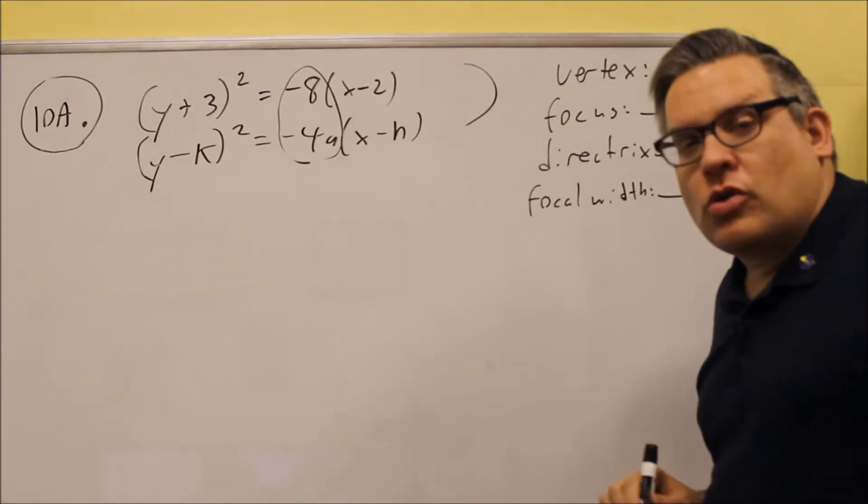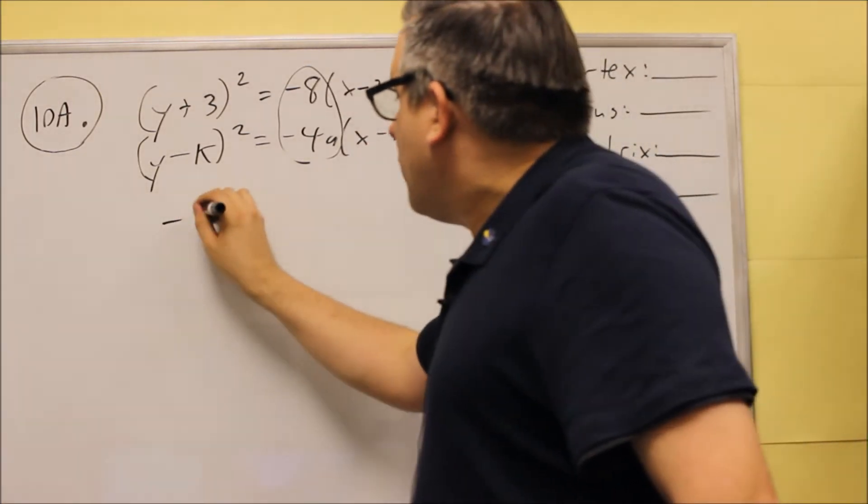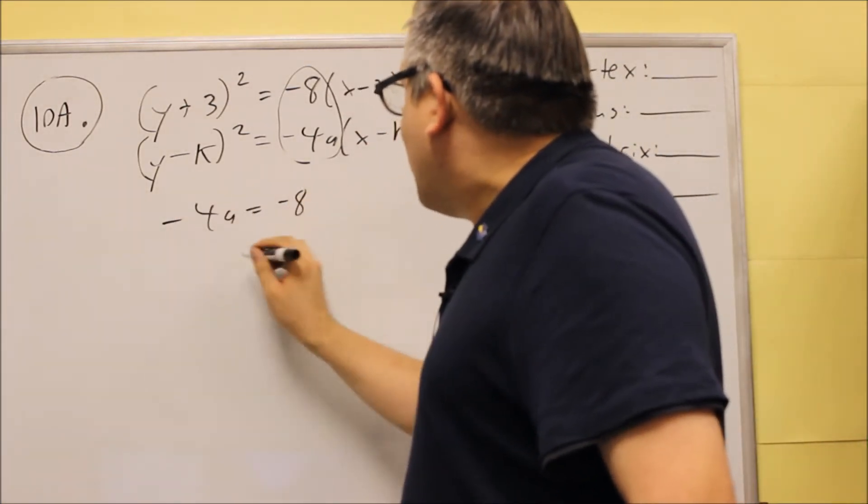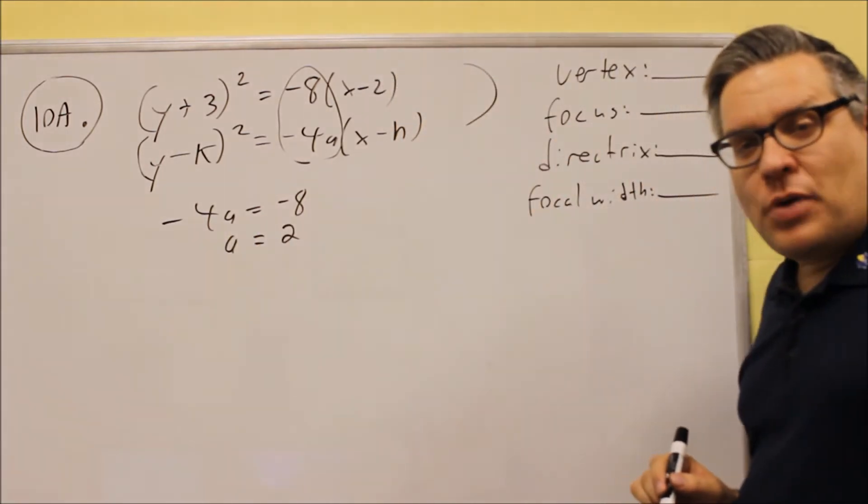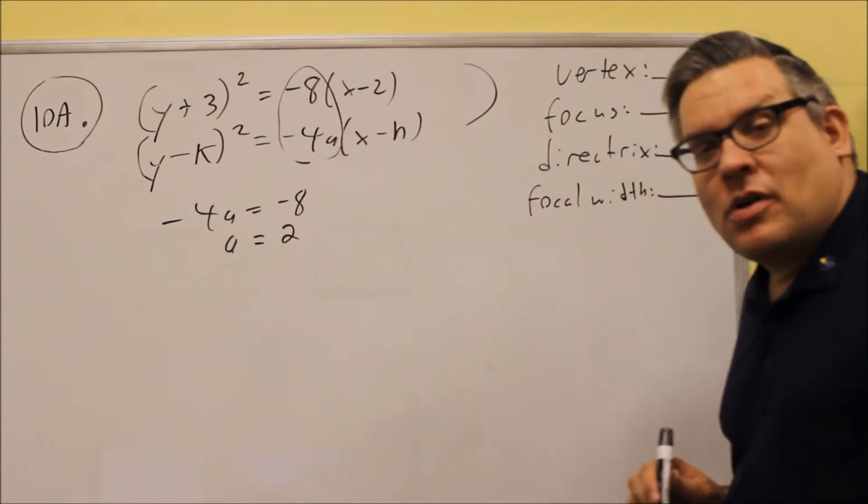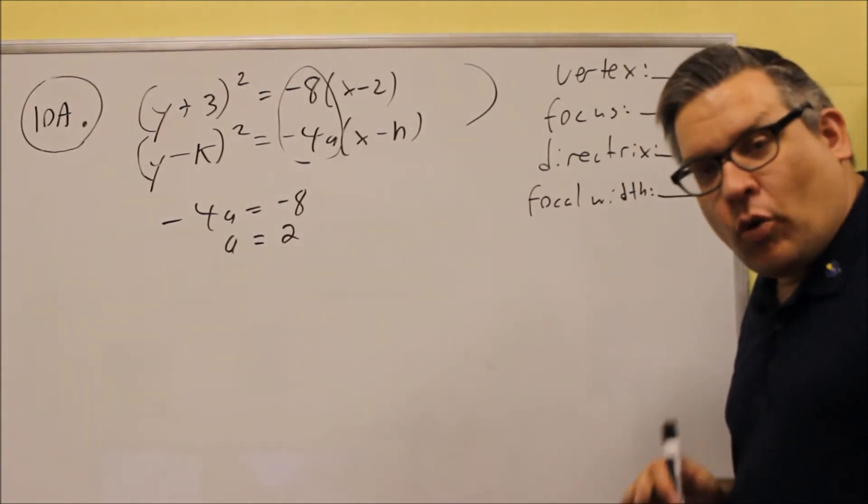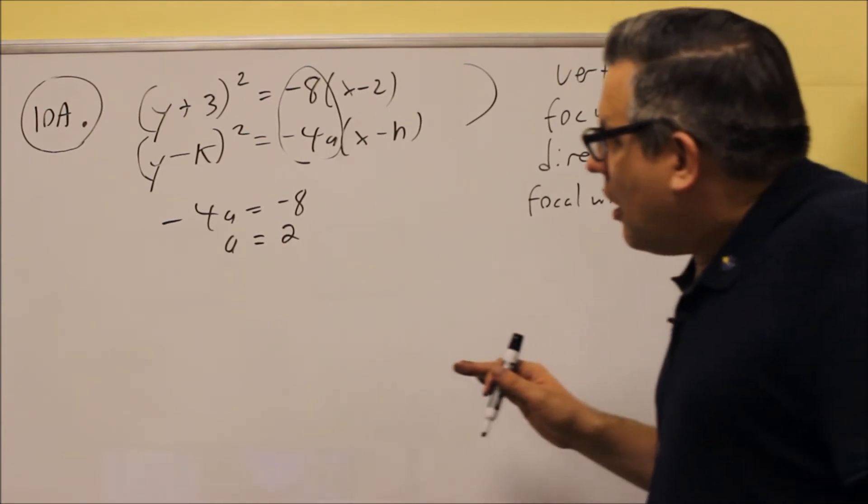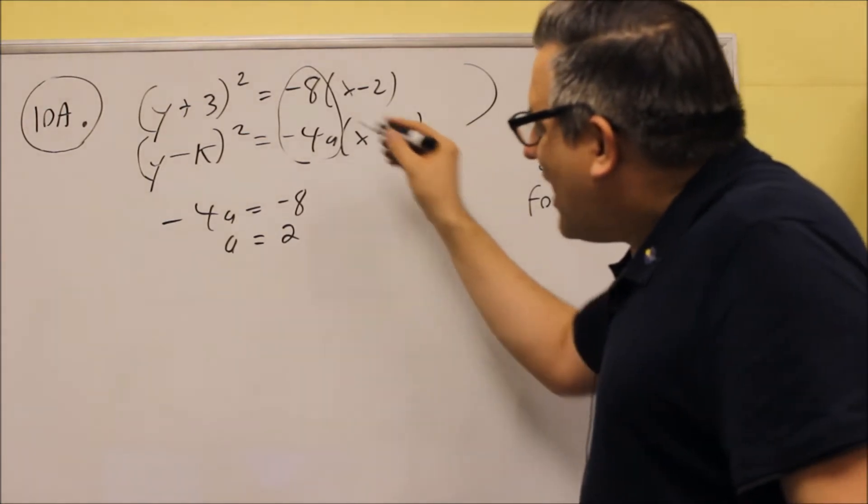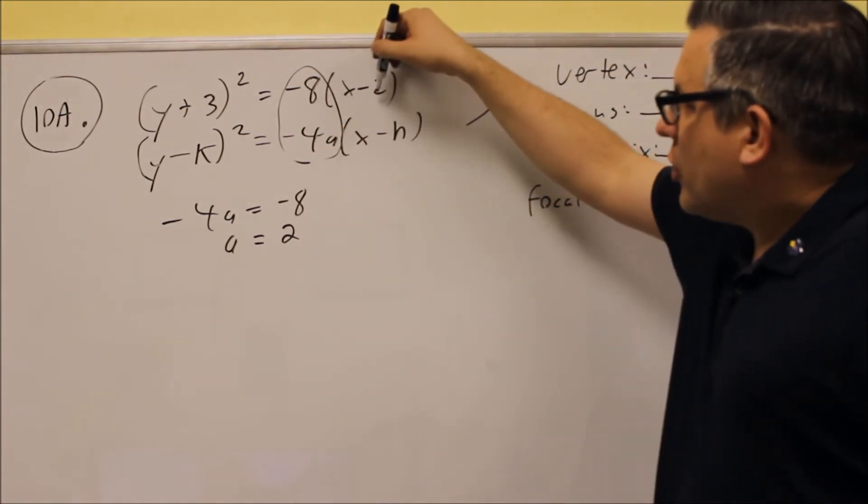I want to match up this part of the formula, negative 4a is going to equal negative 8, and if I divide both sides by negative 4, I get a as positive 2. Now the a value is very important because I need to use that in order to graph it and be able to answer these questions here. So the h and the k, I can get those directly from the formula. Now I just look back at the original one.